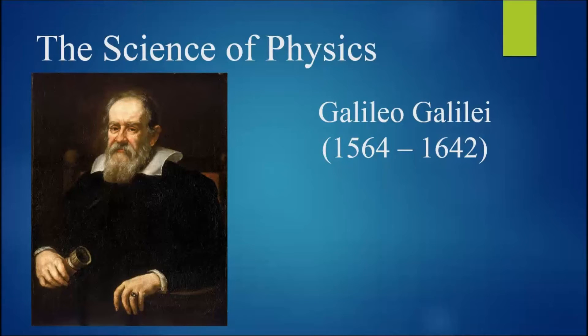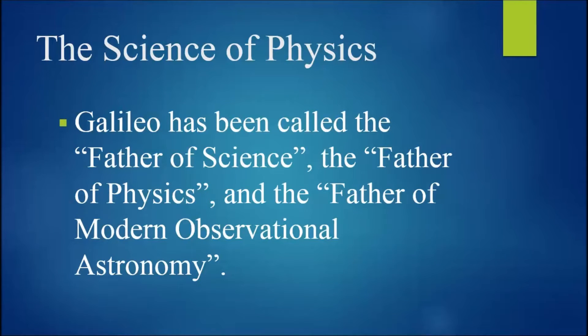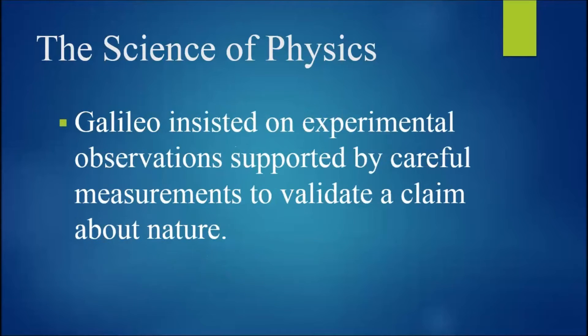The science of physics essentially began with the Italian astronomer Galileo, who lived from 1564 to 1642. Galileo has been called the father of science, the father of physics, and the father of modern observational astronomy. Galileo insisted on experimental observations supported by careful measurements to validate a claim about nature. This is the core of the scientific method. It is not enough to think something is true. You must be able to demonstrate it is true with empirical evidence.